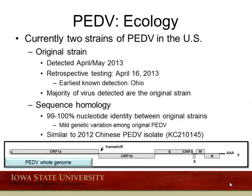The ecology of PED — what we see currently circulating in U.S. swine — involves two different strains. The original strain was detected when PED emerged in April or May of 2013. Retrospective testing at the ISU VDL on retained fecal samples detected a positive accession on April 16th from the state of Ohio. The majority of virus detected is the original strain, with very little genetic variability — nucleotide identity ranging from 99 to 100 percent — and initial sequences were similar to a 2012 Chinese PED sequence submitted to GenBank.